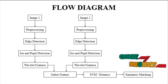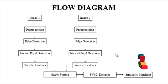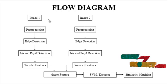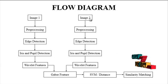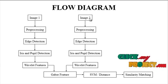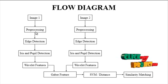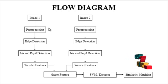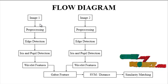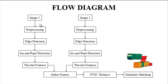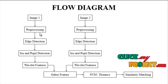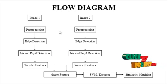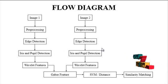Now we discuss the flow diagram for the process. This is the overall flow structure. First, input image 1 and image 2 are taken from the dataset — a folder consisting of several input images. After getting both input images, preprocessing is carried out. In this preprocessing step, resizing is applied if necessary, and then edge detection is applied to detect the edge of the iris.